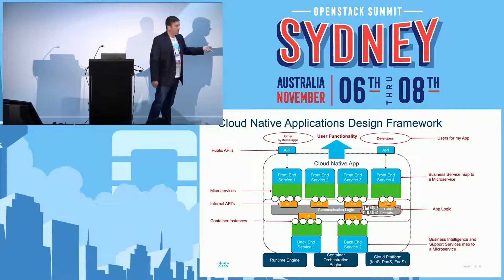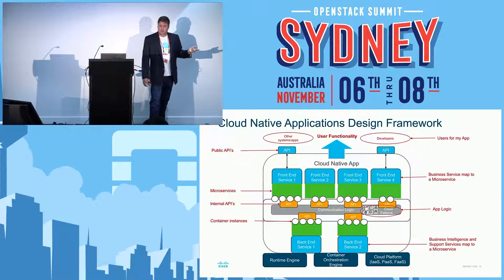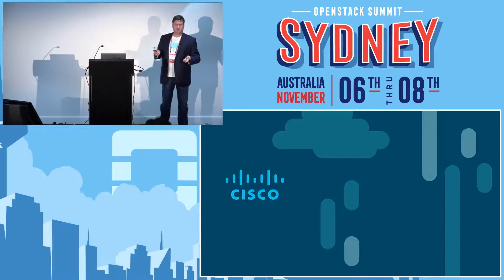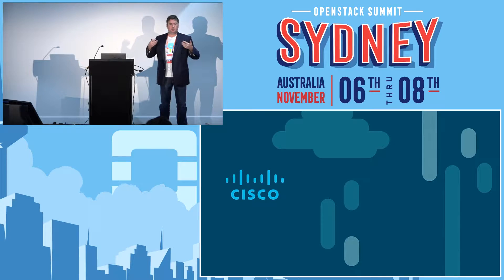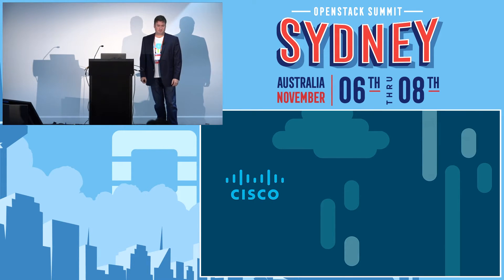This is what we start to look at for a modern application design. I'd encourage you all to check out a website called the 12 Factor Application, because it starts to incorporate a lot of these ideas and puts a framework around how we build our applications. That's essentially it — this was a lightning talk, so I hope that's given you a lot of food for thought. Come and have a chat with us over at the stand or come see me afterwards if you've got any deeper dive questions. Hope it was beneficial, and hope everybody has a good evening.